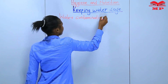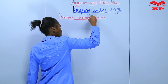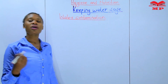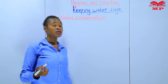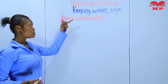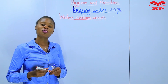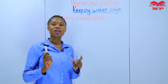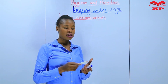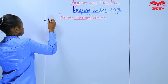Water contamination. To contaminate something is to make something look dirty — for this case, it is water. So what is water contamination? Water contamination is making clean water dirty.